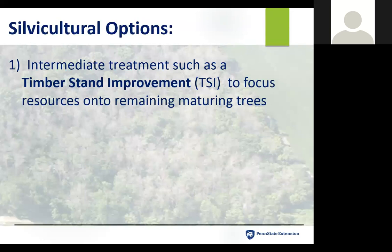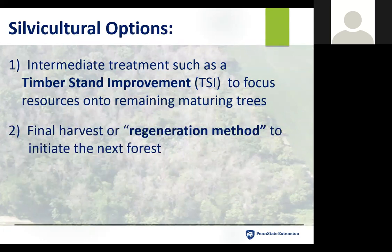Some of those silvicultural options for a pre-salvage treatment would be something like an intermediate treatment such as a timber stand improvement — here the focus is on the remaining mature trees, how you focus sunlight and nutrients onto those desirable non-ash mature trees. Or think about a final harvest or a regeneration method to initiate the next forest. The philosophy is very similar to managing degraded forests, whether degraded from humans and high-grading, or from insects or disease — think about where your forest is moving and what treatments best promote either the mature trees or that next regeneration.